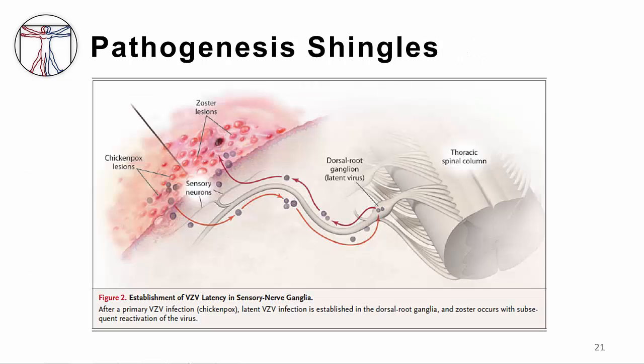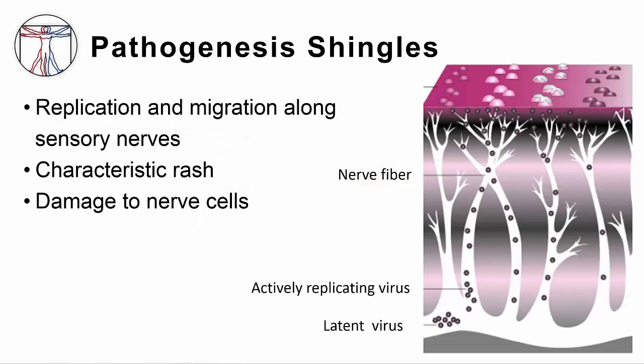During primary viremia, VZV infects nerve cells and becomes latent in the sensory nerve ganglia. A ganglion is a collection of nerve cells that serves as a communication node between the peripheral and central nervous system. Since this is a junction between both parts of the nervous system, the virus can cause disease in both places in susceptible hosts. Shingles results from viral particles in the sensory ganglia switching from latent to active state. The virus then travels from the sensory ganglia through peripheral nerves to the skin, where it replicates and produces the characteristic rash in a dermatomal distribution. Since nerves are involved, pain or change in sensation is part of the clinical syndrome.